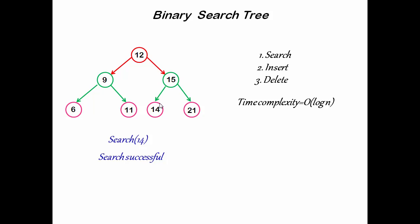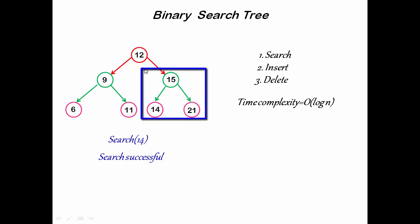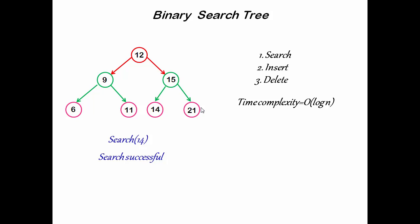When we search an element in a binary search tree, in each step the search space is reduced to half. For example, when searching 14, we ignore the left subtree of 12 and then ignore the right subtree of 15. If n elements are reduced to n/2, n/4, n/8 ... down to 1, and k steps are required, then n / 2^k = 1, so n = 2^k, or k = log₂(n). For a balanced tree, time complexity is O(log n).